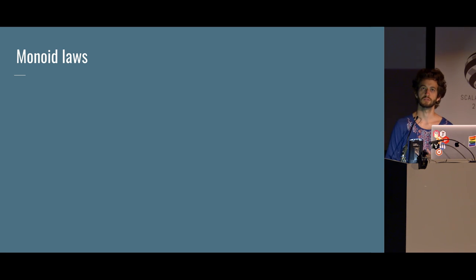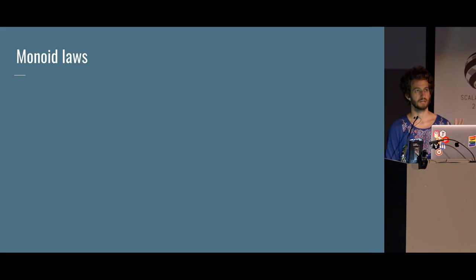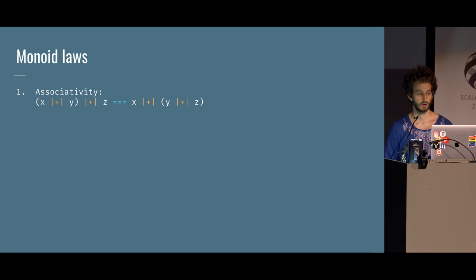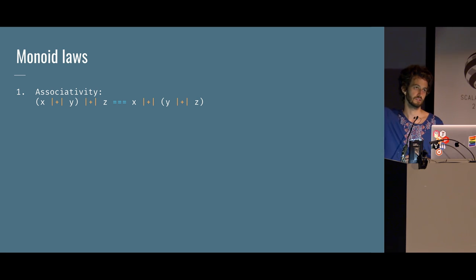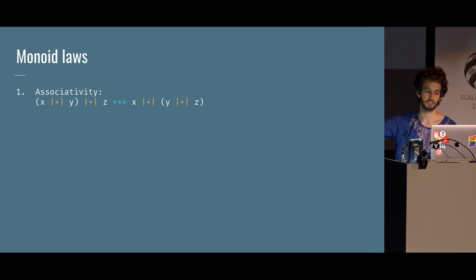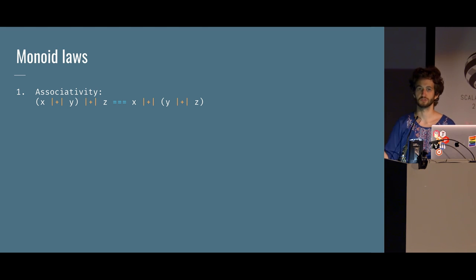Now let's talk about monoid laws — this is where abstract algebra comes in. The first monoid law is associativity. Associativity is very important and it props up a lot. It basically means that the order of doing things doesn't really matter. So X combined with Y, then combined with Z, has to be the same as X combined with Y combined with Z first. This is associativity.